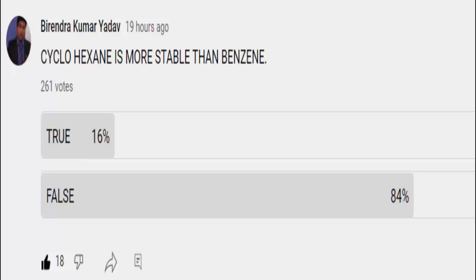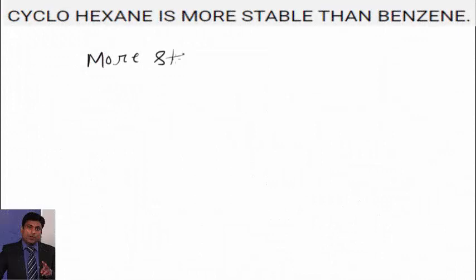But the fact is, cyclohexane is more stable than benzene. Now question arises, how do we find stability? There are different ways to check stability experimentally, like by finding heat of hydrogenation. If I talk about heat of hydrogenation, we say more stable implies less heat of hydrogenation.